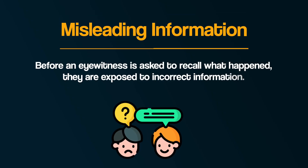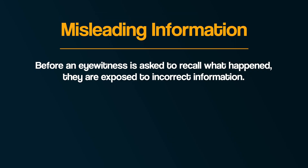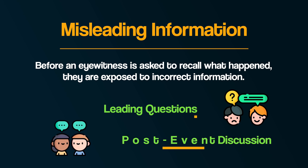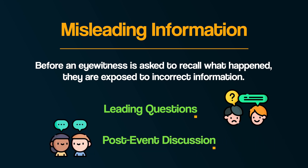Misleading information is where someone is an eyewitness to a crime, but before they are asked to recall what happened, they are exposed to new information. How will this affect the original memory? Very importantly, under the heading of misleading information come two parts: firstly, leading questions, and secondly, post-event discussion. Let's explore leading questions first.